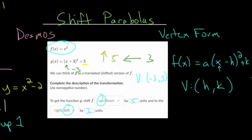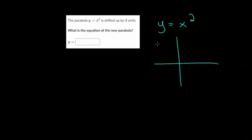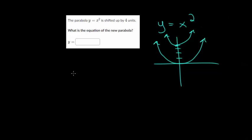Let's do another problem since all these are going to be very similar. We have the parabola y equals x squared and we want to shift it up four units. We start with our parent function and we want to make everything move up four units. Shifting up and down involves adding and subtracting on the outside — to go up we add, to go down we subtract. So our new equation would be y equals x squared, and since we want to go up four units, we add four on the outside.